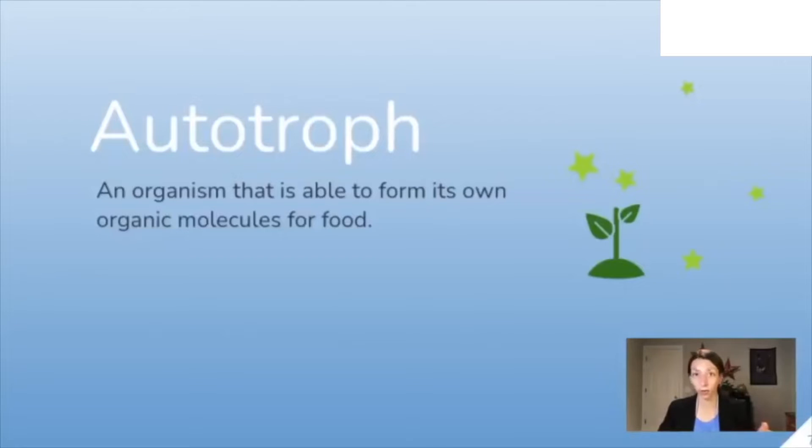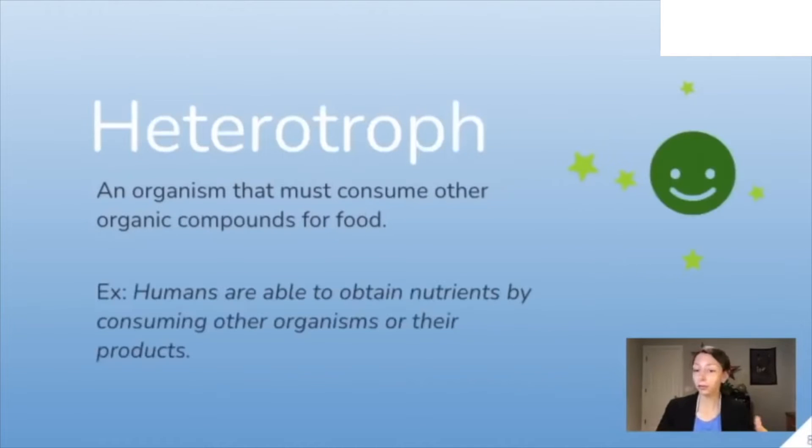An important word here is autotroph also known as a producer, these are organisms that can make their own food or are able to form their own organic molecules for food. Plants are autotrophic. Heterotrophs are organisms that must consume other organic compounds for food and that means consuming other organisms. Heterotrophs are consumers. For example humans are able to obtain nutrients by consuming other organisms or the products of other organisms.